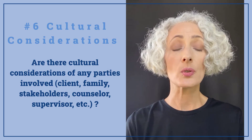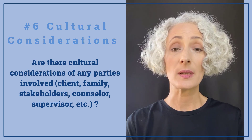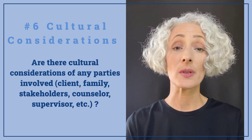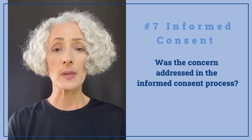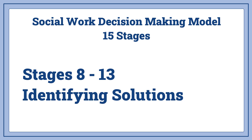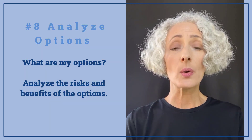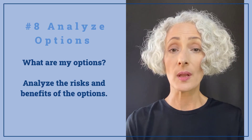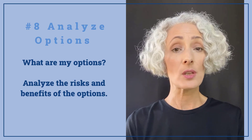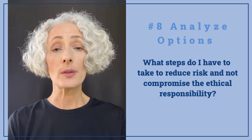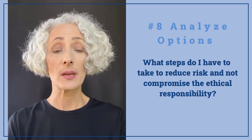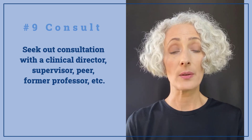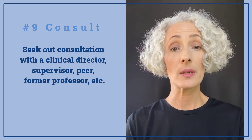In stage six, look at any cultural considerations — not just for the client, but also including stakeholders such as family members and friends. In stage seven, determine whether this issue was or was not addressed in the informed consent process. Stages eight through 13 are about finding a solution. Stage eight: identify available options, analyze the risk and benefit of each, and determine what steps are necessary to reduce risk without compromising your ethical standard. Step nine suggests consulting with a peer — a fellow counselor, supervisor, or superior at your place of employment.